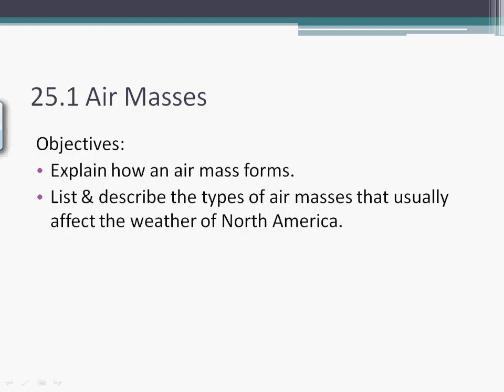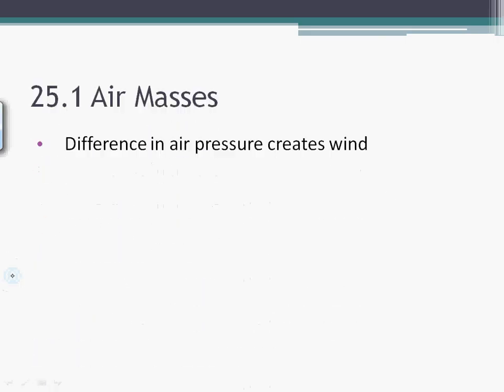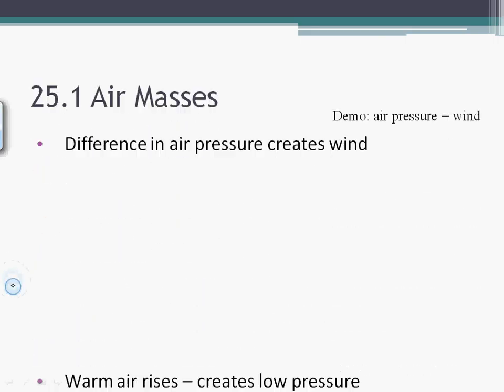What we're going to talk about is how air masses form, and you're going to be able to explain that. You're also going to be able to list and describe the types of air masses and what normally affects North America. There are other types of things that affect other continents and other areas of our world — they hold the same principles — but we're going to focus on North America and pretty much us.